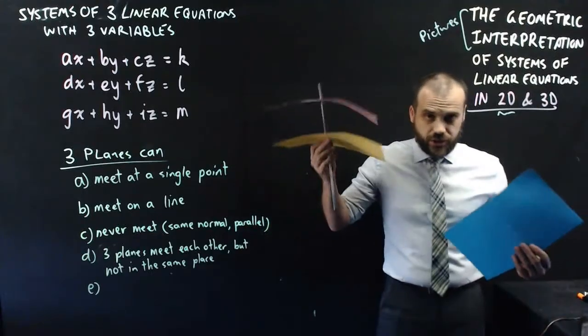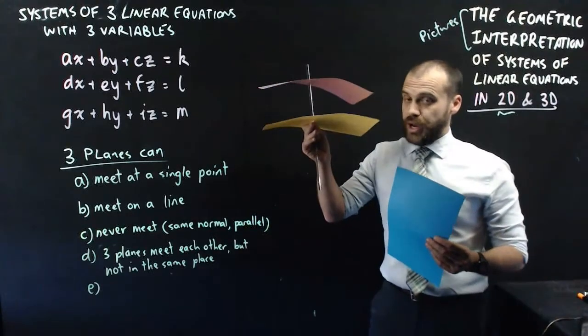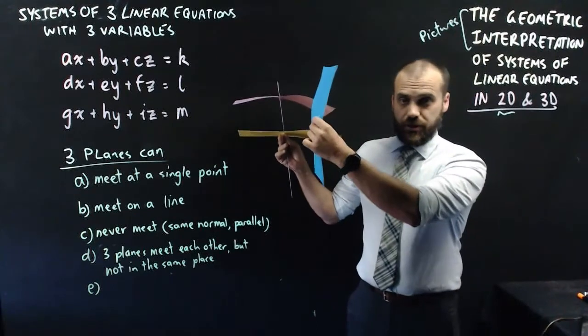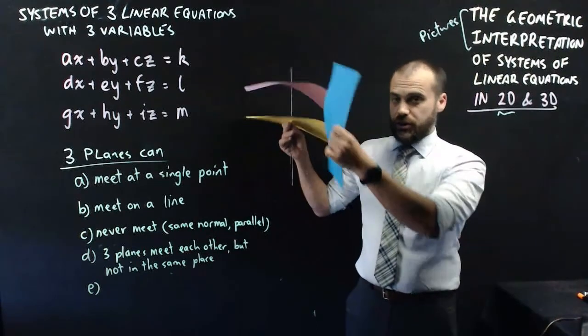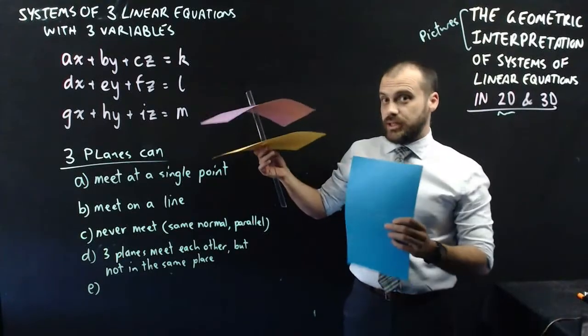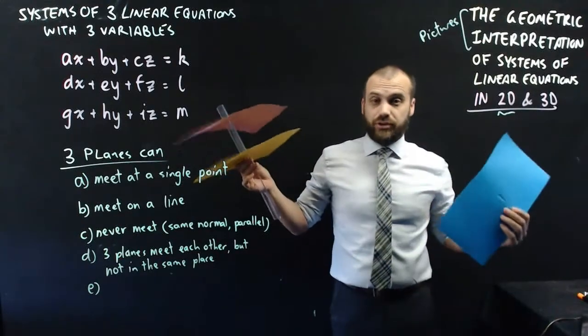You can also end up in weird situations like this where you have two parallel ones, they share the same normal, and then one that cuts through the middle of those. So two that never meet and one that meets both of them. That's another option for our geometric interpretation.